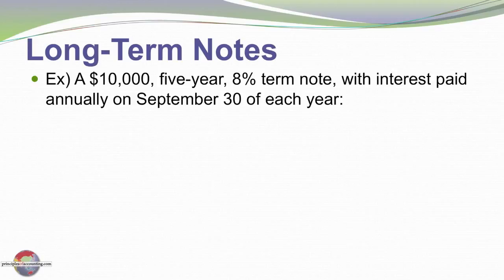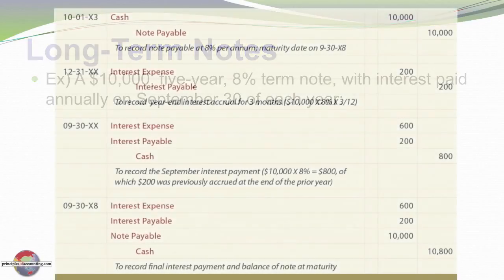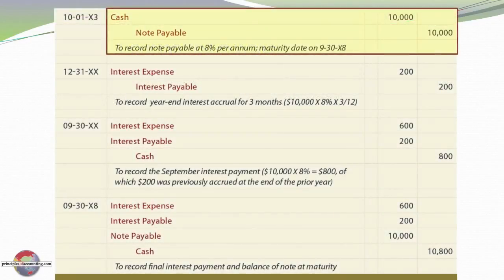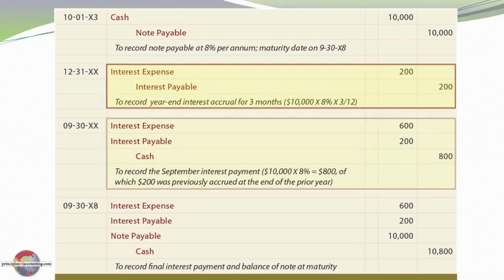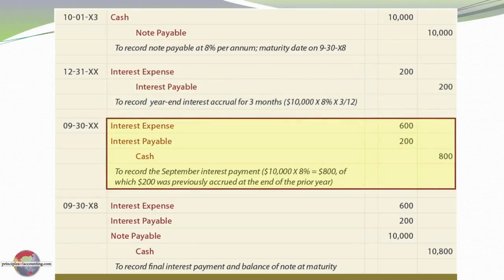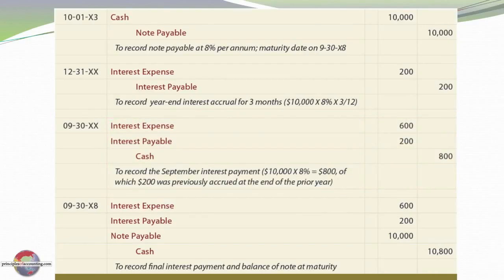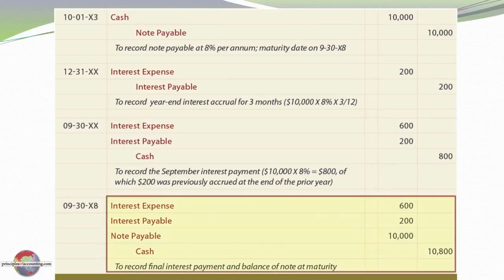For example, we might have a $10,000 five-year 8% note with interest paid annually on September 30th. The first entry involves borrowing the $10,000 — debit cash and credit notes payable. At each annual year end, December 31, we would accrue interest: $200 for October, November, December. Each September 30th, an $800 interest payment is due — that's 8% of $10,000. $200 was previously accrued and $600 relates to nine months of the new year. This continues until maturity, when we pay the $800 interest plus the $10,000 principal.